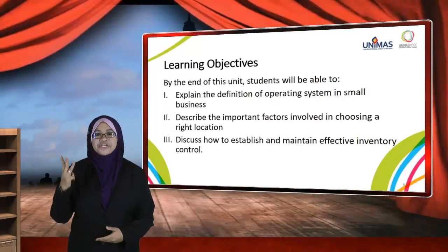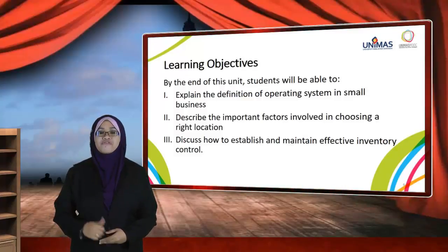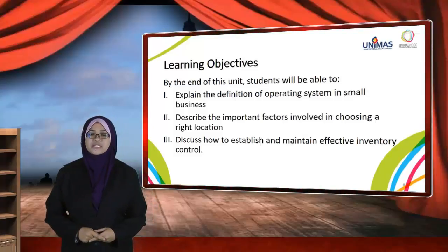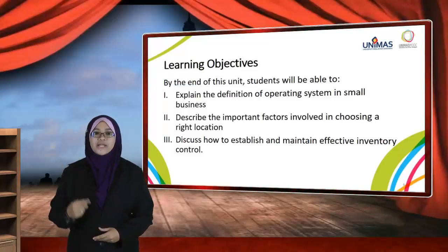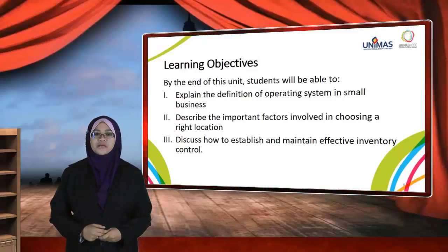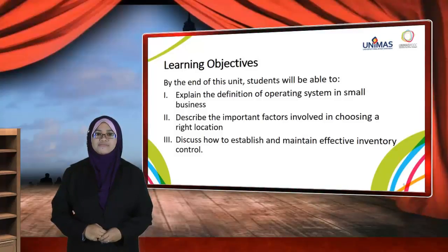There are three learning objectives for this unit. By the end of this unit, students are expected to be able to: first, explain the definition of operating system in small business; two, describe the important factors involved in choosing the right location; three, discuss how to establish and maintain effective inventory control.